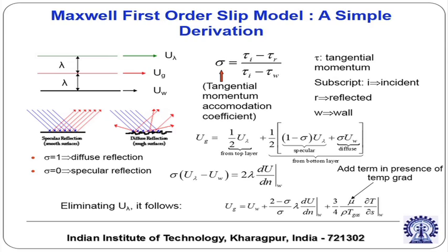When the continuum hypothesis loses its validity altogether, you cannot use the Navier-Stokes equation with any boundary condition. Just remember this simple thing: when the continuum hypothesis is not valid, forget about the Navier-Stokes equation — it cannot give you the right picture. It may be possible to develop a strategy to use the Navier-Stokes equation with some additions and alterations, but that is beyond the scope of this course.